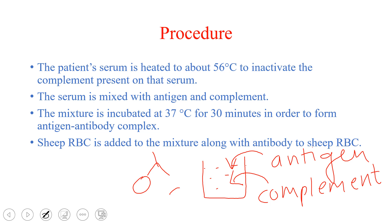If we put the antigen in the serum and there is an antibody present, there will be formation of an antigen-antibody complex. Then we add the complement proteins, which will attach to this antigen-antibody complex. The mixture is then incubated at 37 degrees centigrade for 30 minutes to allow full antigen-antibody complex formation. Then sensitized sheep RBCs are added to the mixture.